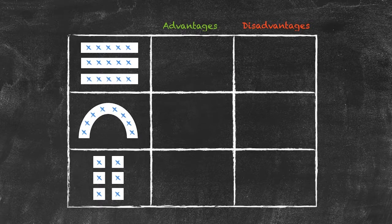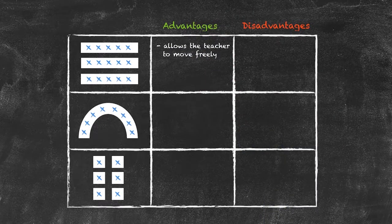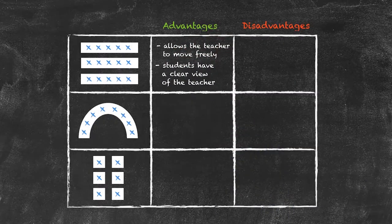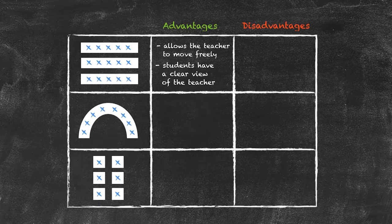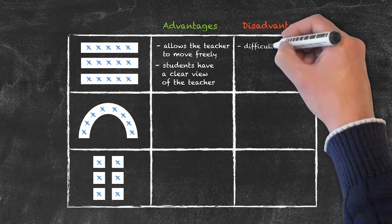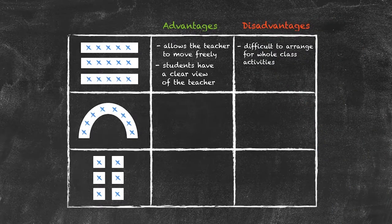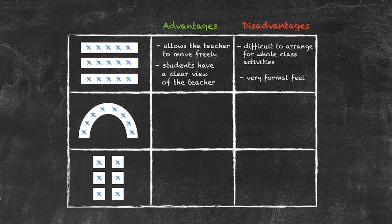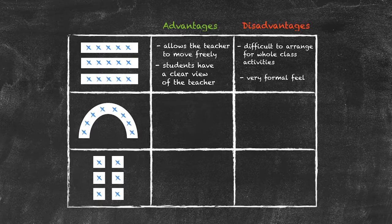Let's take the rows first. One potential advantage is that it gives the teacher the opportunity, if arranged correctly, to move around freely. The second potential advantage is that it allows the students to have a clear view of the teacher at the front of the class. There are some potential drawbacks: it can be very difficult for whole class interaction — difficult for people to get up and move around — and it has a very formal feel to it. If we're doing communicative activities, that formal feel will reduce the opportunity for students to talk to each other.